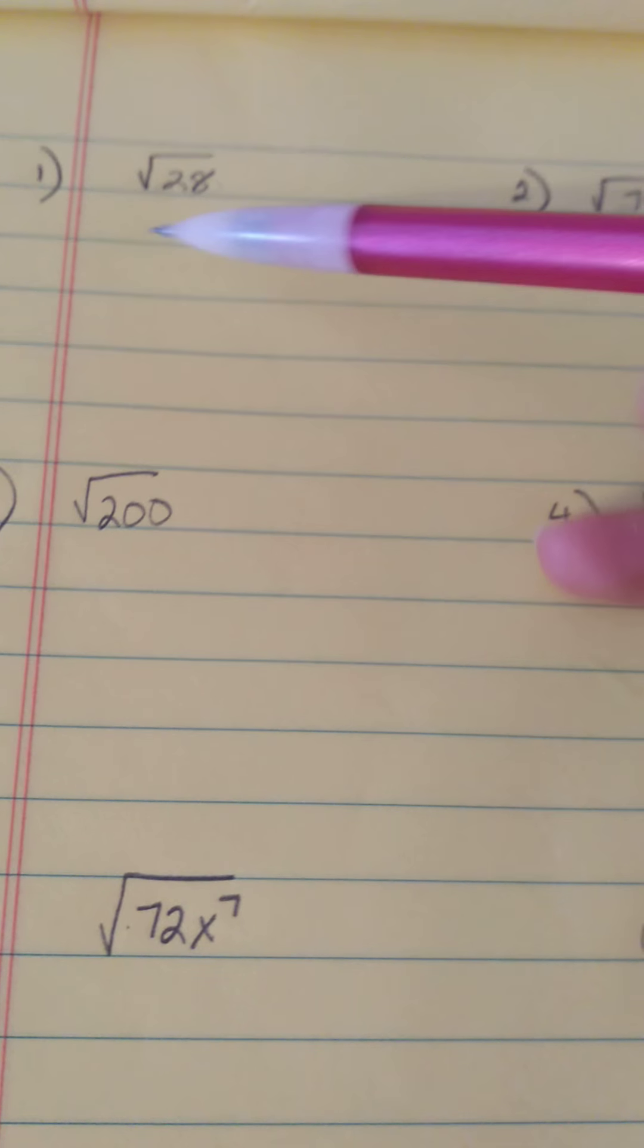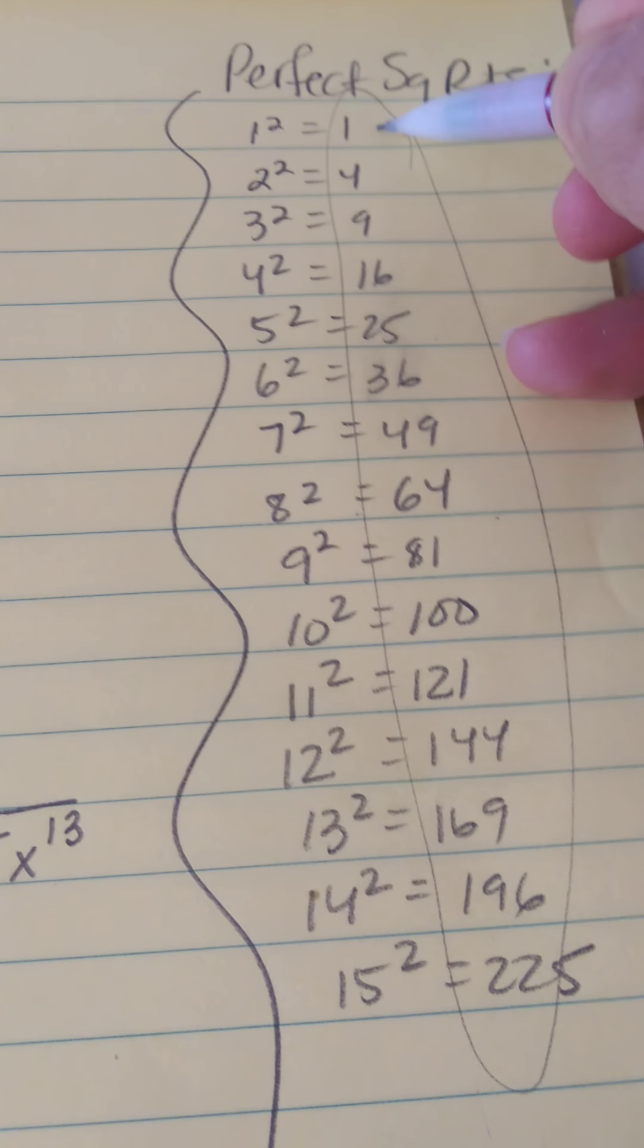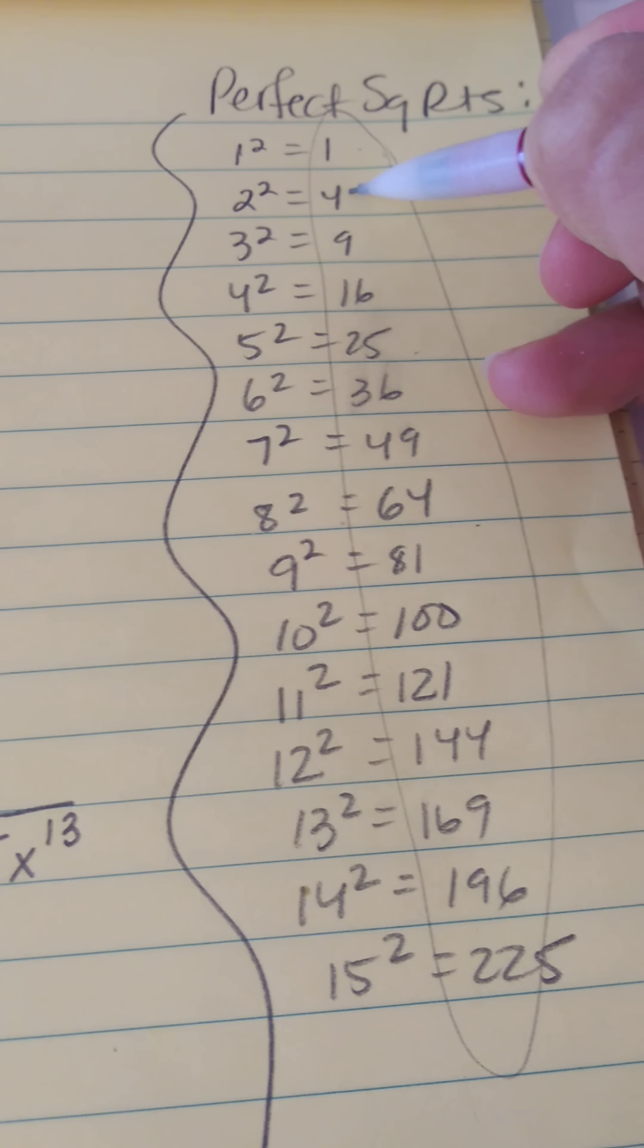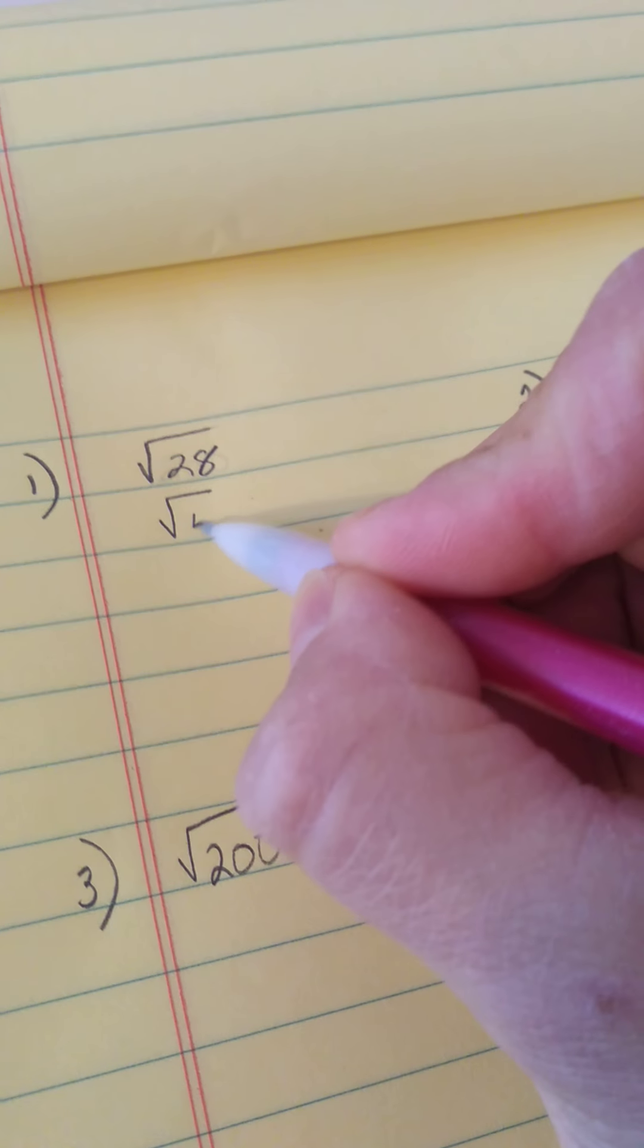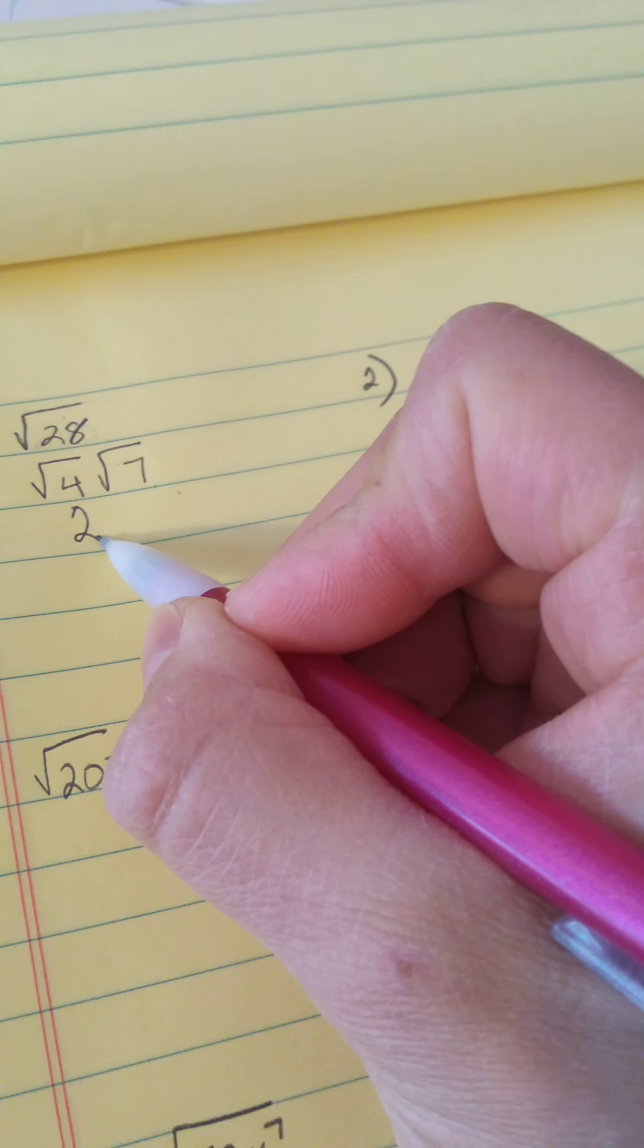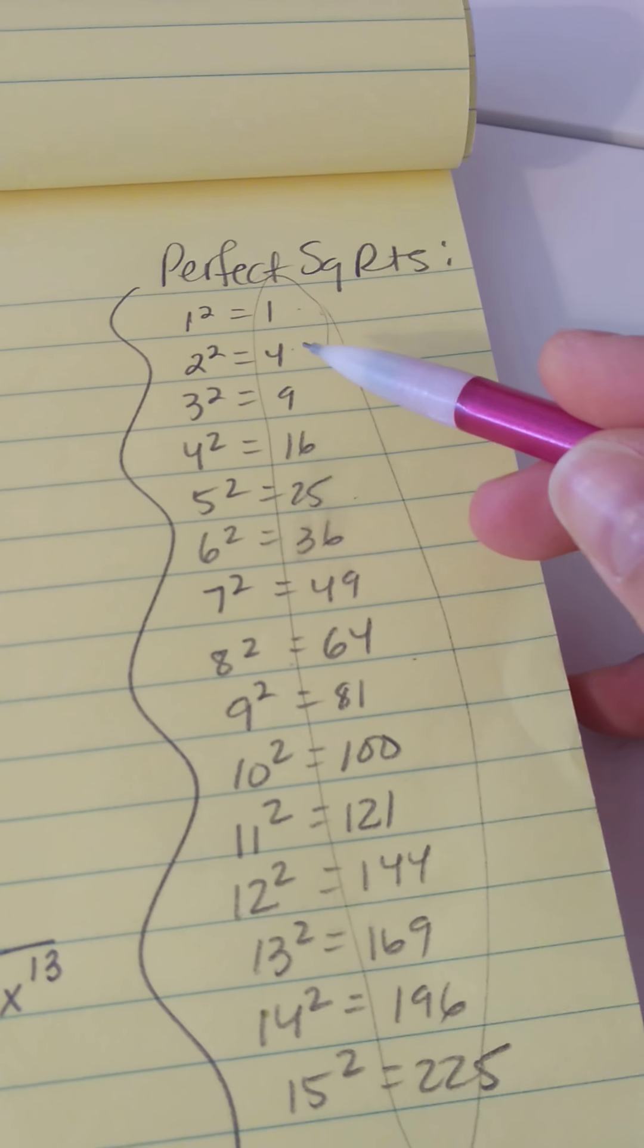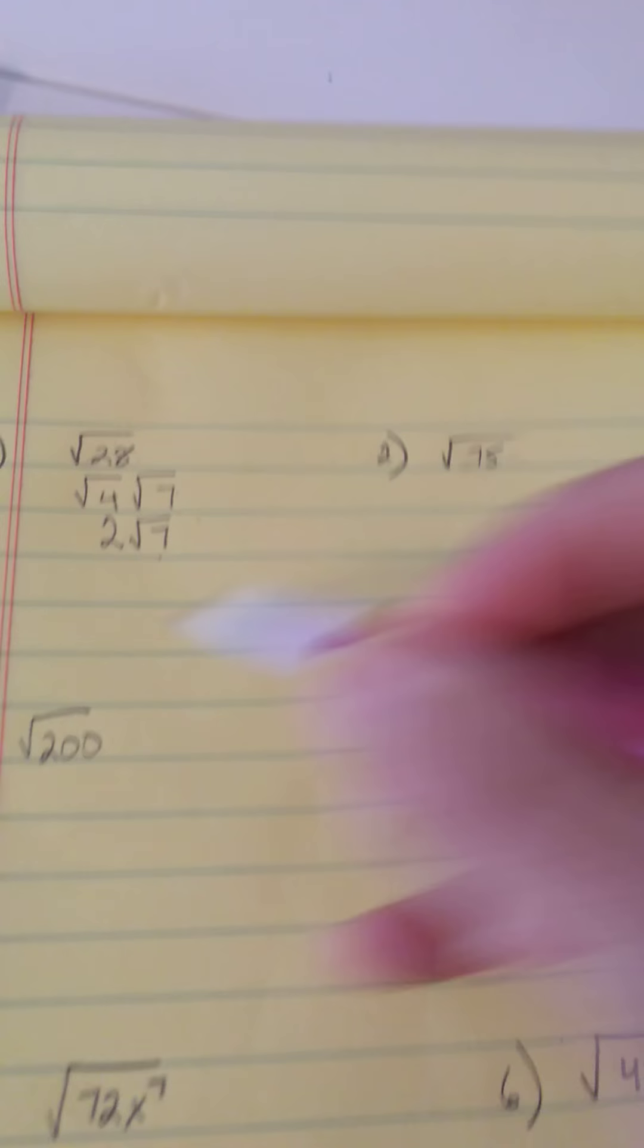So let's start with 28, the square root of 28. Go through the list. One divides into everything so it's not that. Four divides into 28 seven times. So I'm going to write four and seven next to each other because four times seven is 28. This is the one that gets simplified and you just do it once. This gets carried down because it's a prime square root. No other perfect square root divides into seven except for one which makes it prime. So this guy's done.